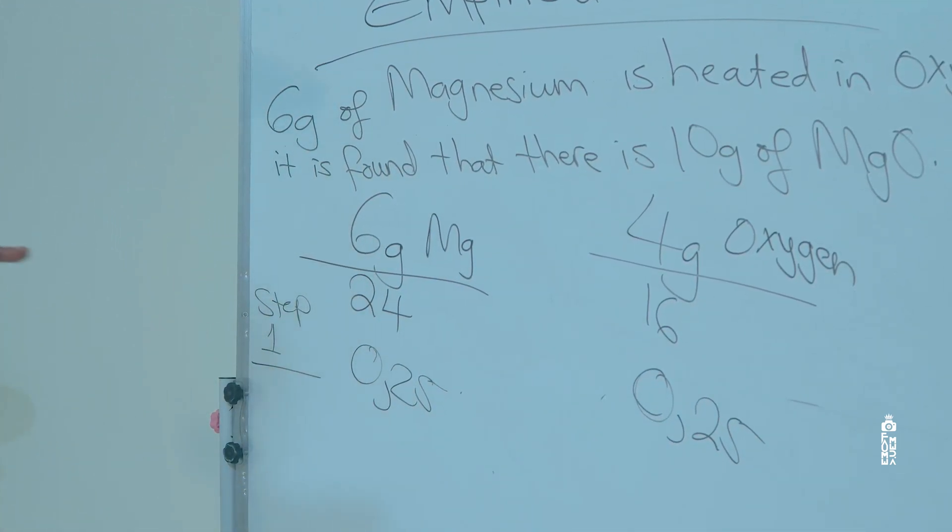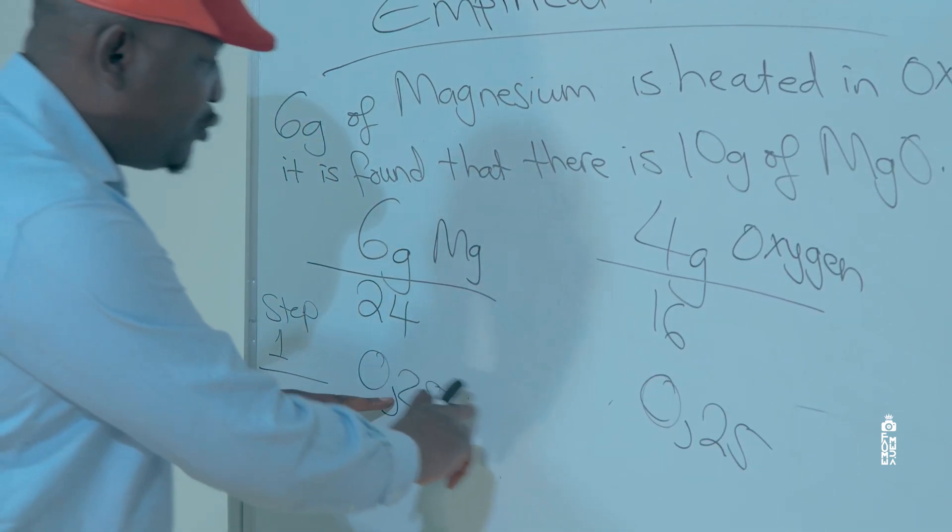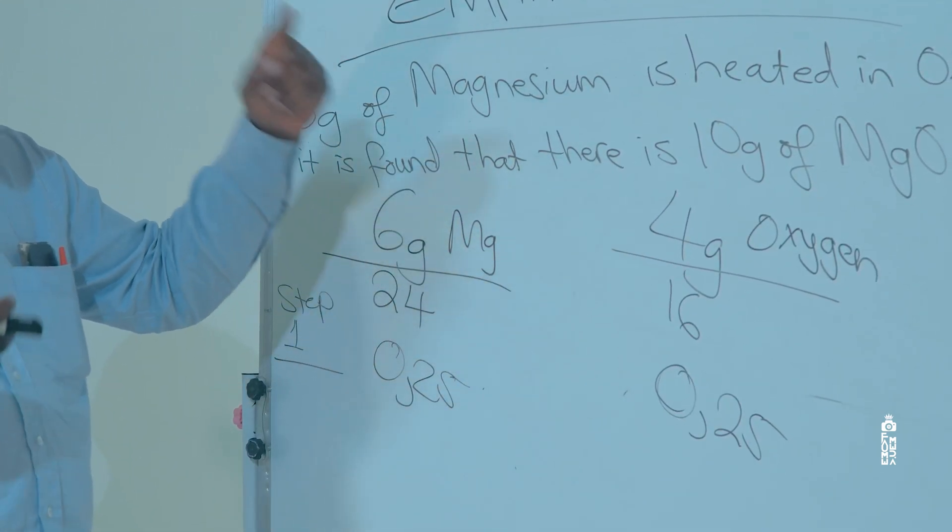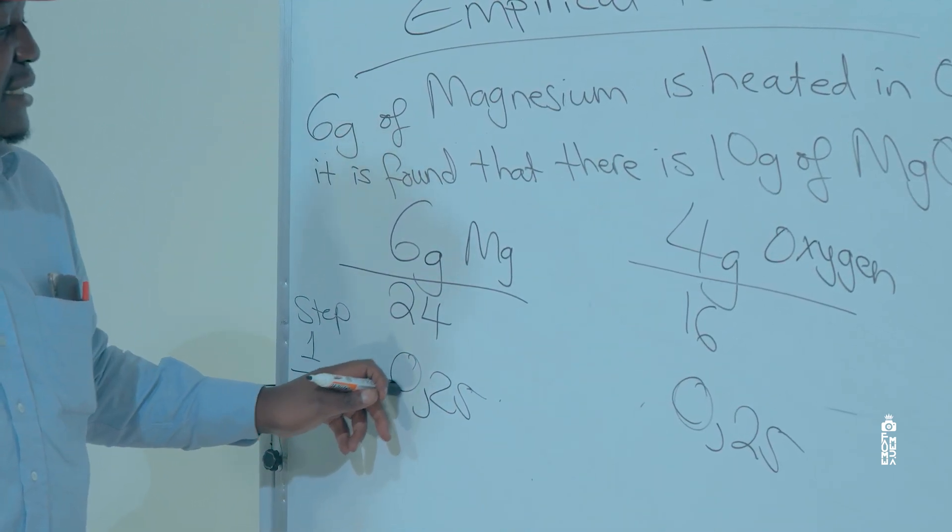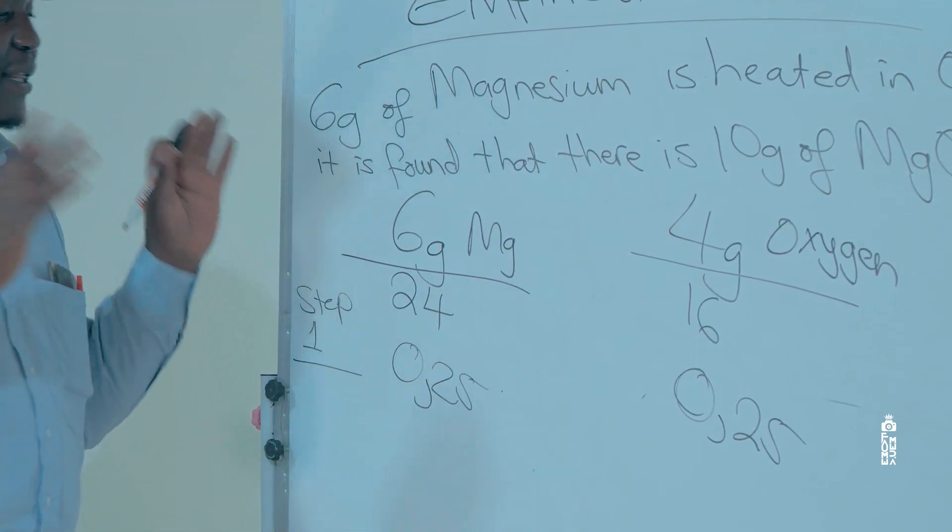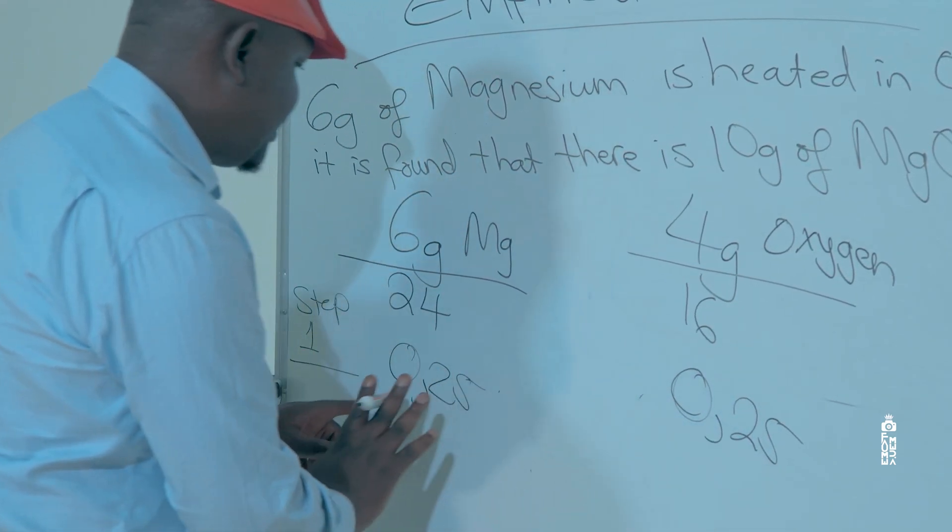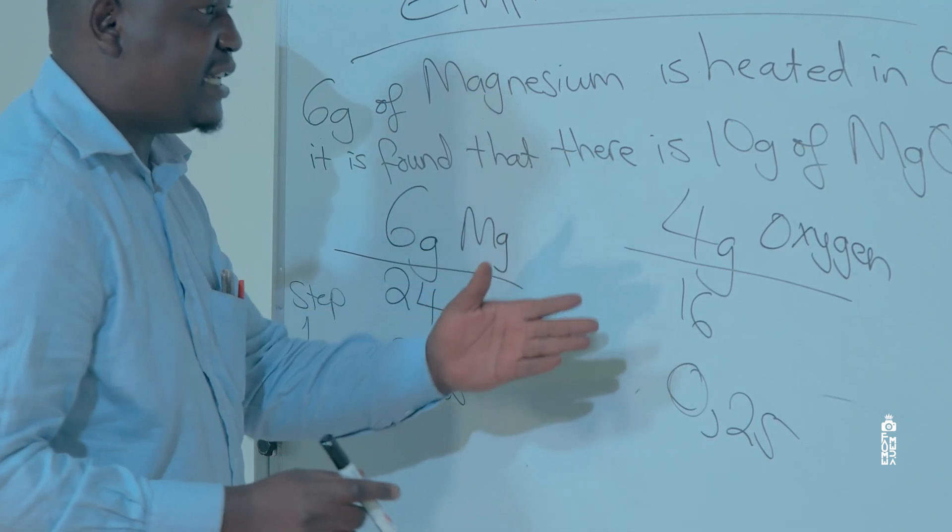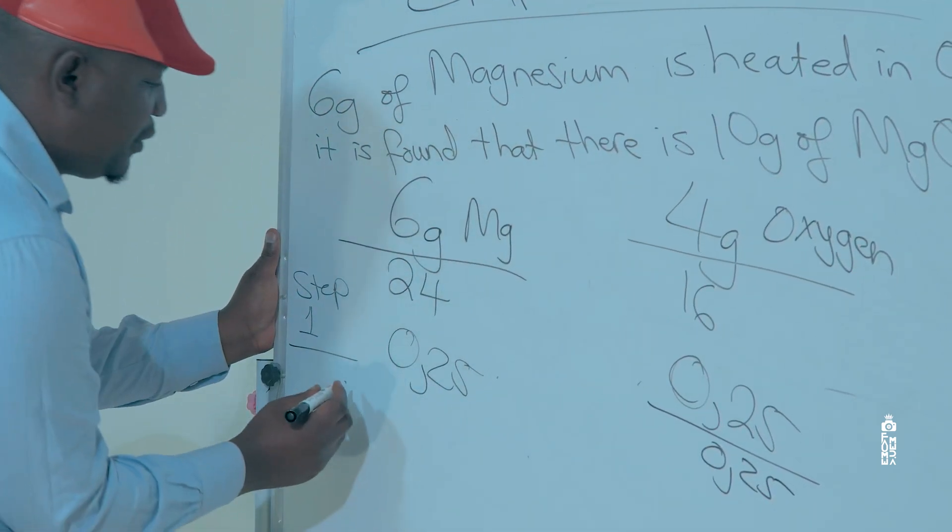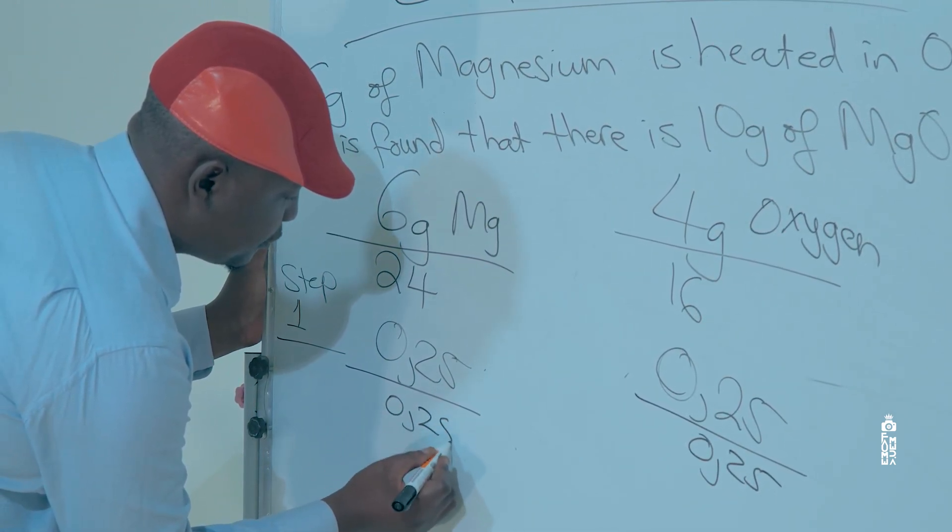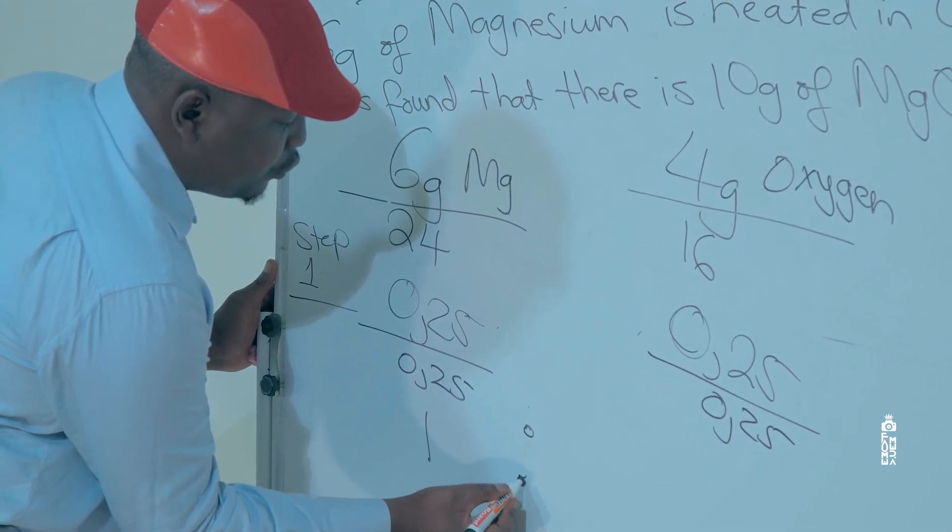So after you've got these values, the next thing that you're going to do is from these values that you got after dividing each element by its relative atomic mass, you are going to take the smallest among these numbers and then divide all the numbers by the smallest number. In this case we have 0.25, 0.25, so we divide by 0.25 on both sides. You are going to get 1 here, you are going to get 1 again.